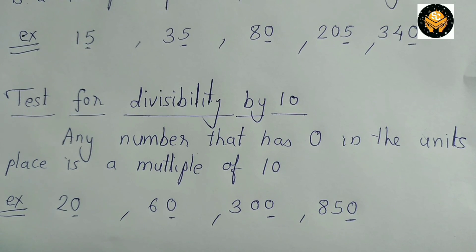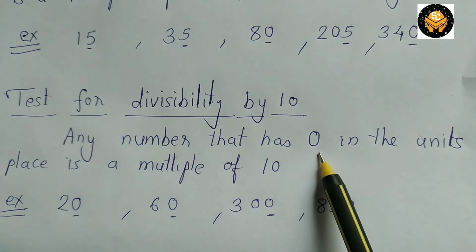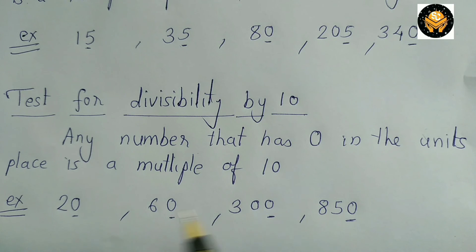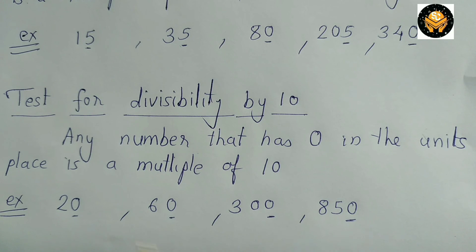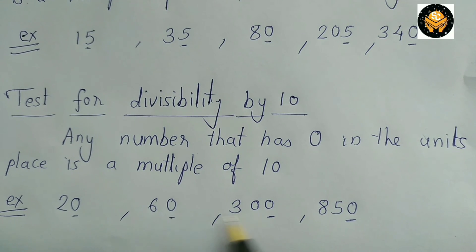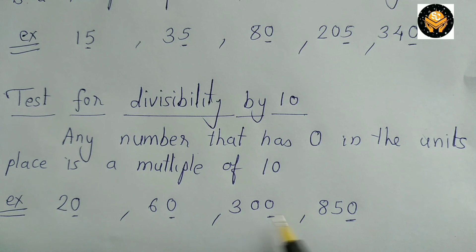Now let's see the divisibility test for 10. Any number that has 0 in the unit place is a multiple of 10. For example, 20, 60, 300, and 850 all have 0 in the unit place, so these numbers are divisible by 10 and are also multiples of 10.